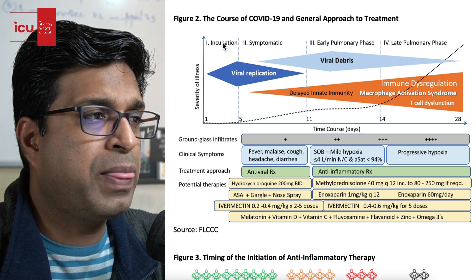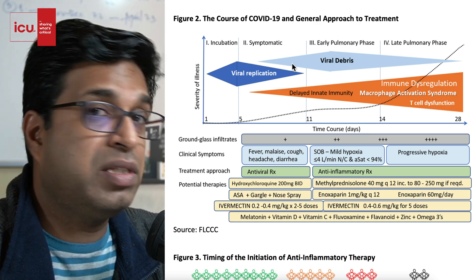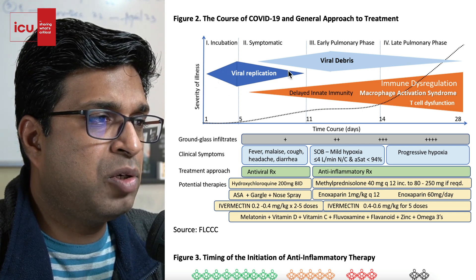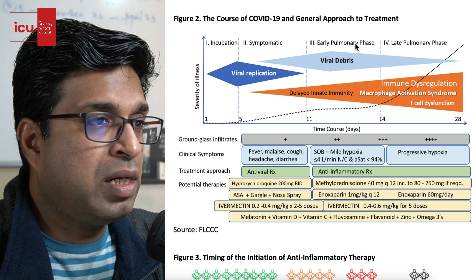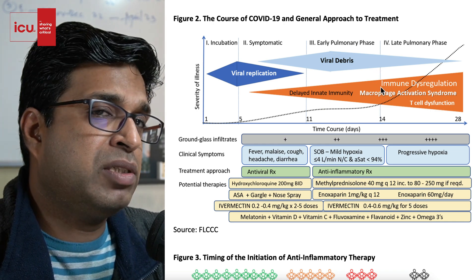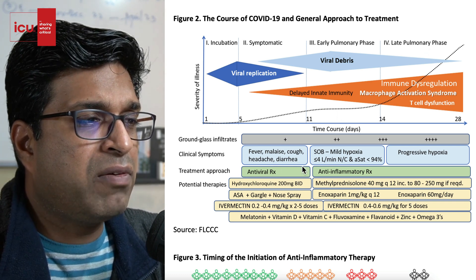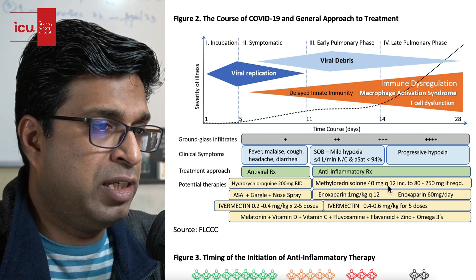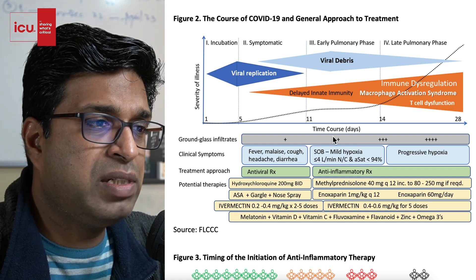It's very important to understand: we need to divide this roughly into two phases — the viral replication phase and the immune response phase. This is important because it helps decide therapy. In the incubation and symptomatic stages, viral replication is maximum then decreasing as immunity boosts. In early pulmonary phase, immunity is still rising. If not stopped, there is a surge with immune dysregulation entering the late pulmonary phase, with progressive hypoxia and drastically abnormal CT scans.